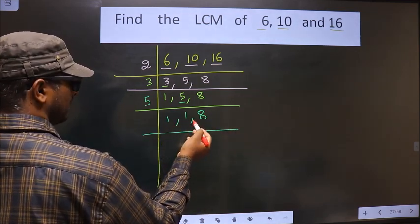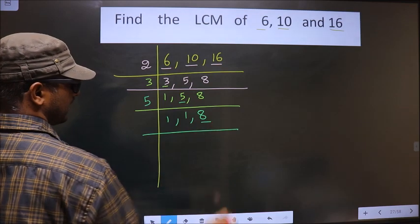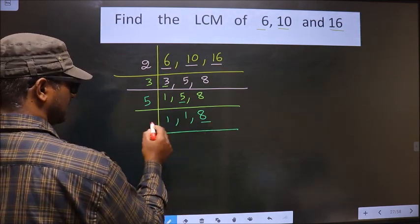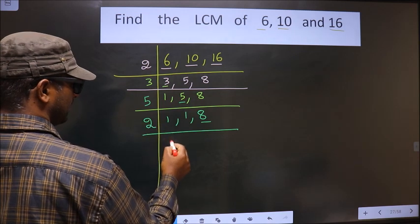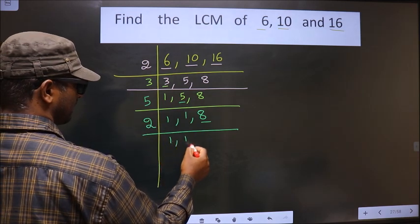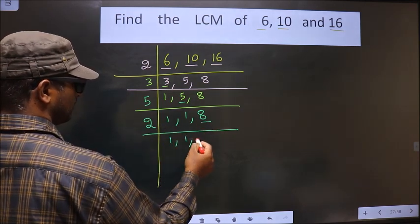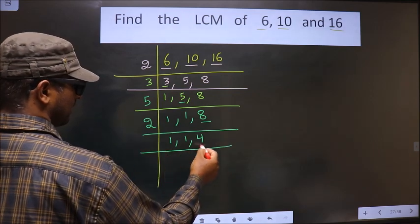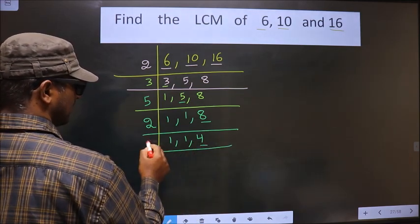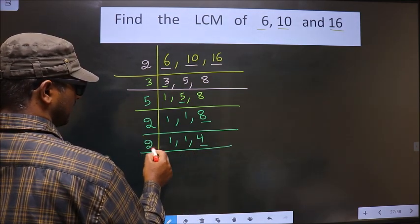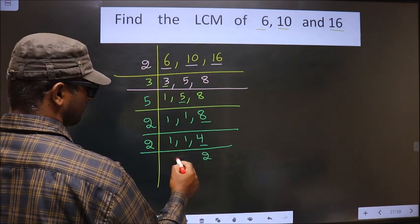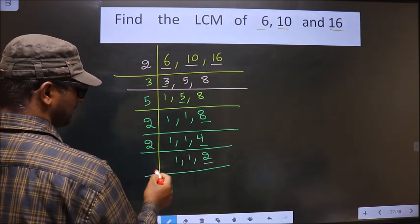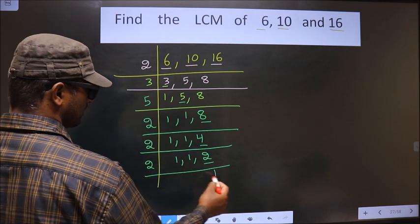Now here we got 1, here we got 1, so focus on to the next number, that is 8. 8 is an even number, so we take 2 here. When do we get 8 in the 2 table? 2, 4 is 8. Now here we have 4. 4 is an even number, so I take 2. 2, 2 is 4. Now 2 is a prime number, so 2, 1 is 2.